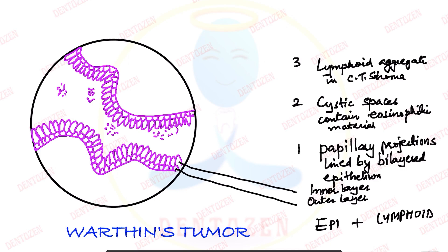Now let's draw the nuclei. The inner layer cells will have nuclei showing a palisading arrangement, meaning all the nuclei are at the same level. We draw all the nuclei like this — that is the palisading arrangement of the inner layer, which is made up of columnar cells.